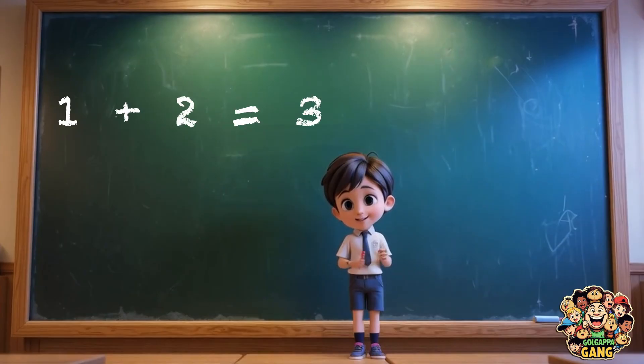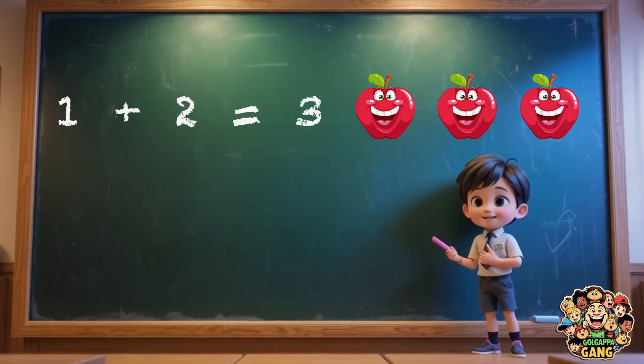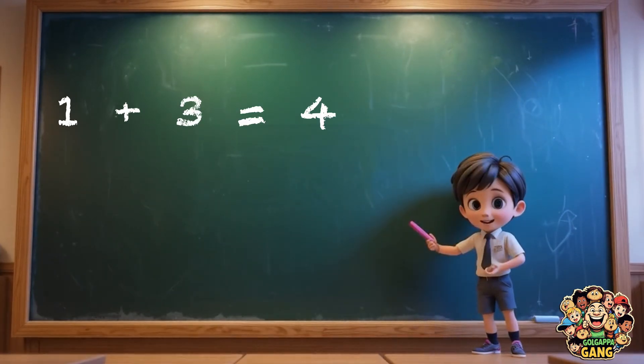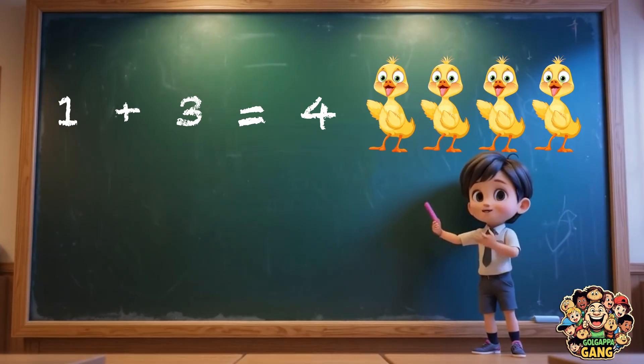One plus two equals three. Like, one apple plus two apples equals three apples. One plus three equals four. Like, one chick plus three chicks equals four chicks.